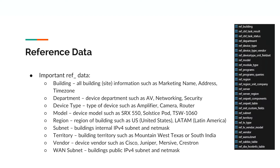Building is the actual WeWork building where the device is located. Department is which WeWork department is responsible for device service — for example, networking, security, or AV. Device type is the device's primary use, such as router, switch, camera, or screen share. Subnet is the building's internal IPv4 subnet and netmask, highly critical for device detection and identification — we only scan networks that WeWork owns and operates to avoid security threats. WAN subnet is the public IP information of the building, useful for external applications.